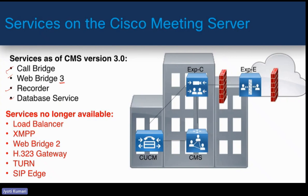We will see that in a lab. CallBridge is the important service for all calls to be managed for conferences. If users are in the same location, we can have a single CallBridge for them based on call capacity. But CallBridge is divided based on location, so if there are users on different locations, there will be one CallBridge created for each. If you plan to use a web app, the web app is the new application which is a replacement to the Cisco Meeting App, the old one.